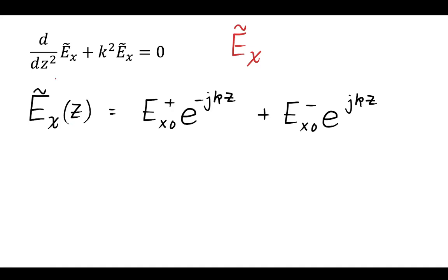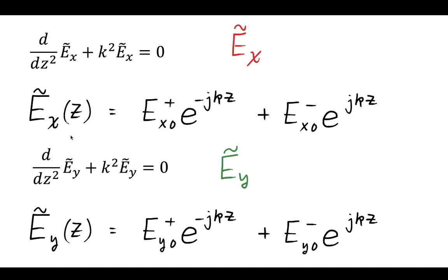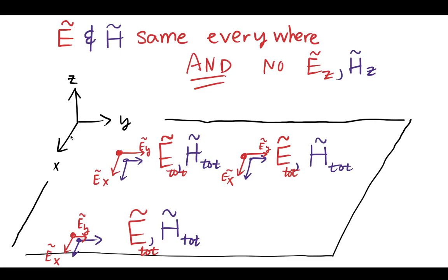Our solution to this differential equation has those two terms. The total solution for Ex is Ex as a function of z, and we see that the only variable we have knowledge of is z. So in the phasor domain, Ex is a function of z. Likewise, we could get the same result for Ey — the y-direction solution to that differential equation has the same form as the x-direction solution.